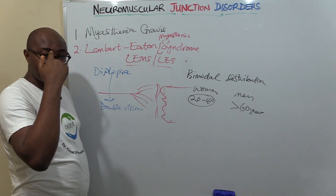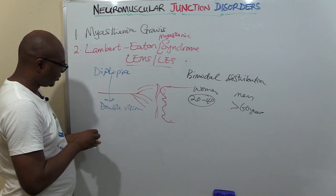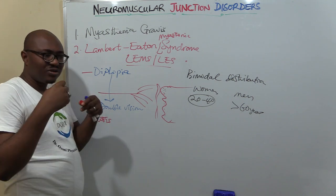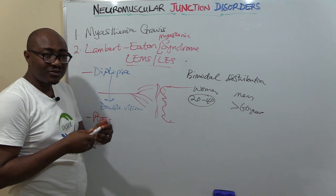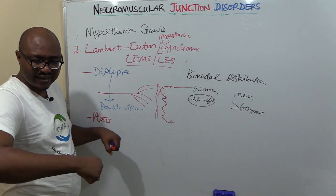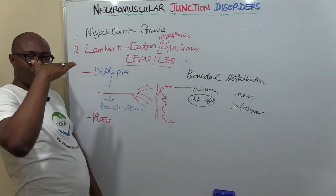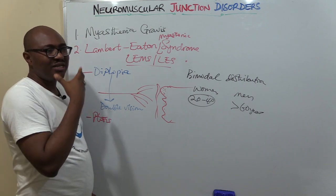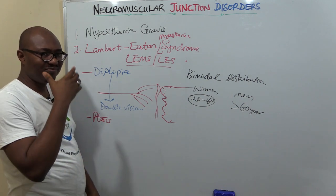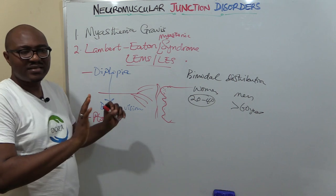When it affects the eyelids, it leads to ptosis—drooping eyelids. It also affects muscles of the upper limbs more than lower limbs, and facial muscles, causing a sad, depressing look because of the paralysis and weakness of facial muscles.